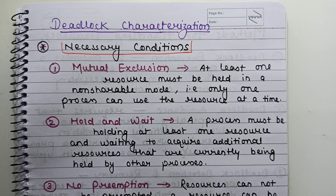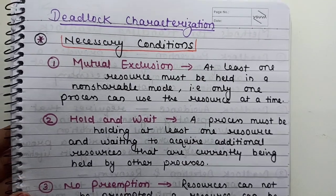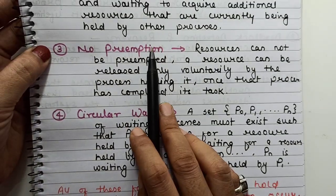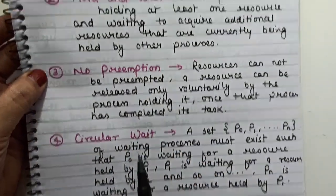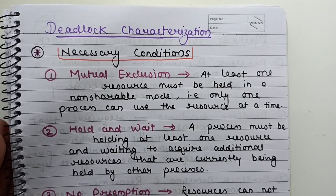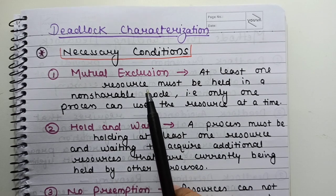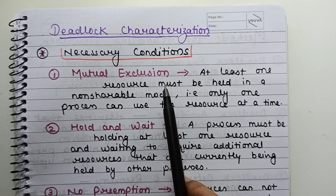A deadlock situation can arise if the following four conditions hold simultaneously in a system: mutual exclusion, hold and wait, no preemption, and circular wait. If all four conditions hold simultaneously in a system, a deadlock will definitely occur. Let's understand each one by one. First is mutual exclusion, which we have already discussed in the context of the critical section problem.